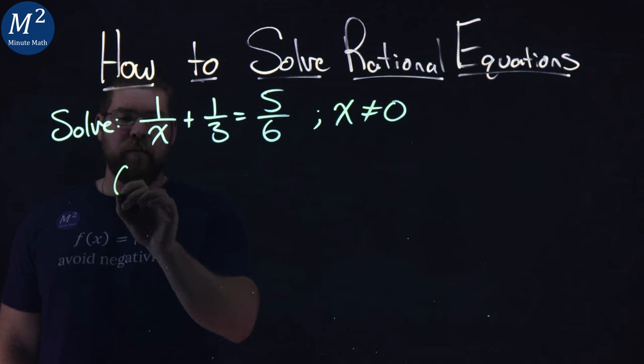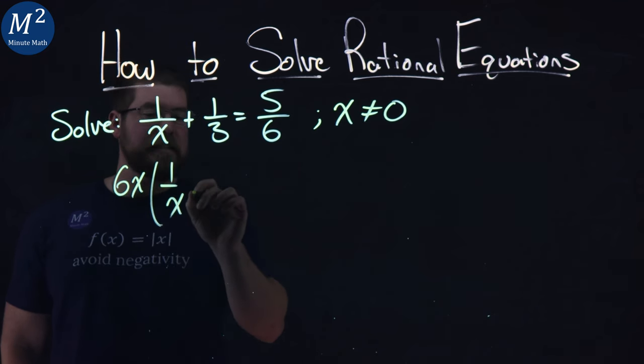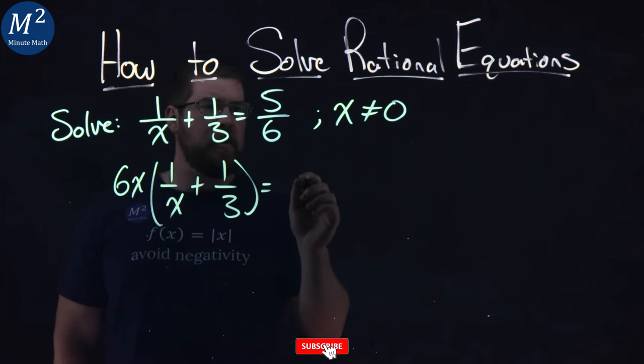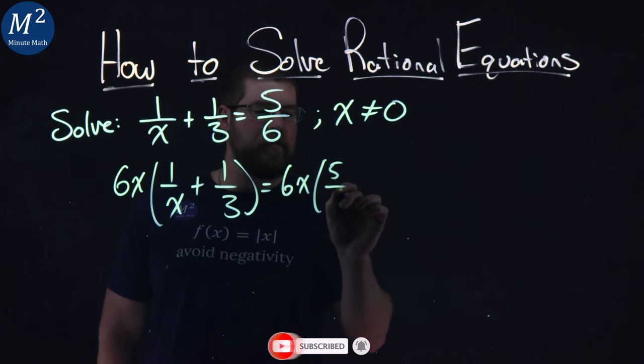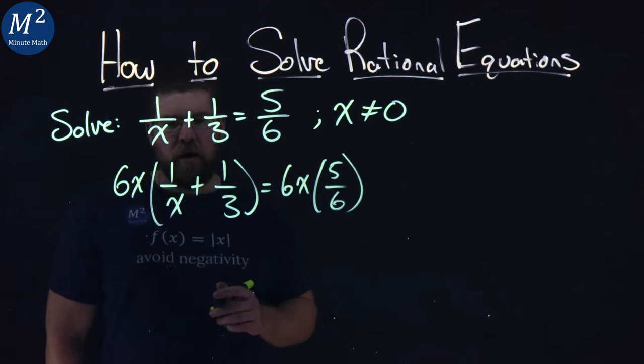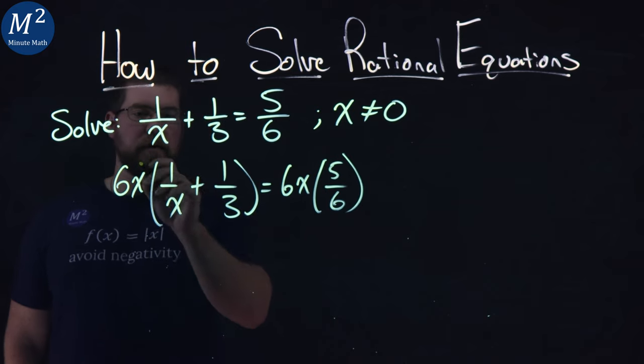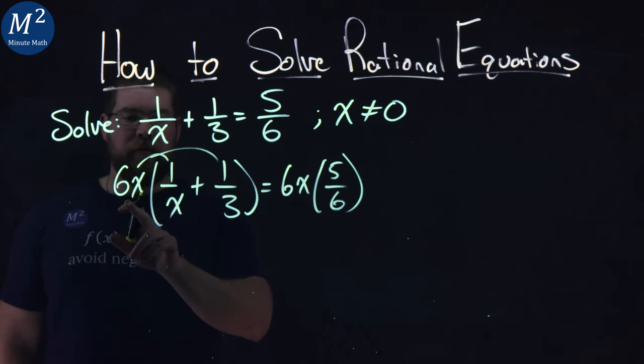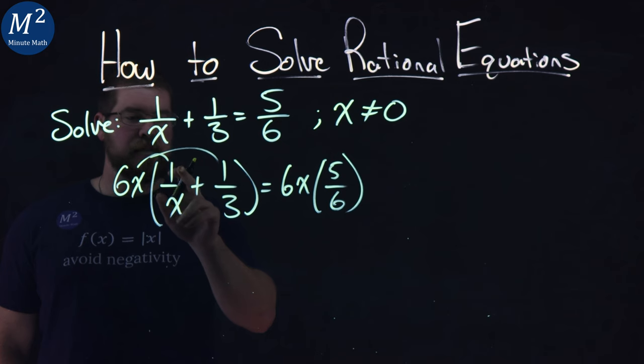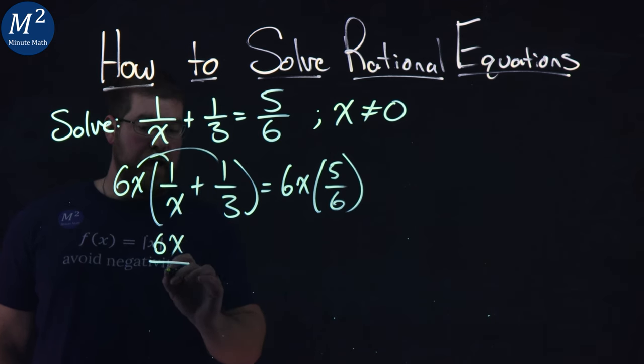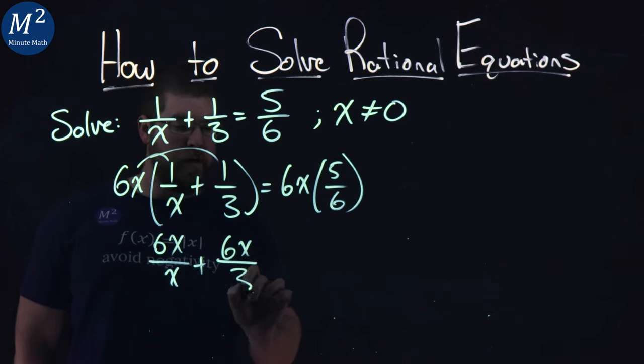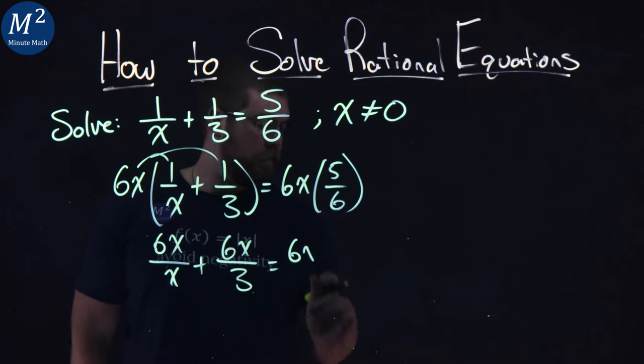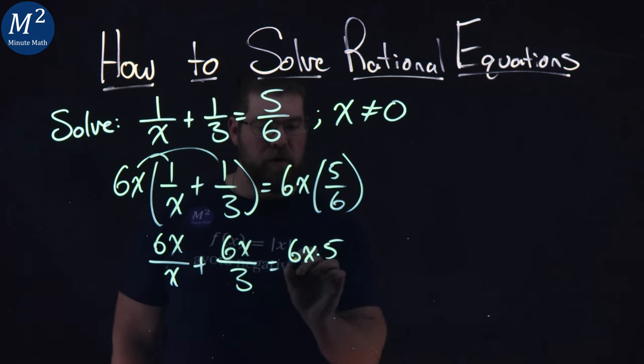So I'm going to rewrite this and multiply both sides of the equation by 6x. And this is one of the techniques you can do to solve this. So let's do 6x here, and we have 5 over 6. Well, what happens when I multiply this across to all parts here? I have 6x times 1 is 6x over x plus 6x over 3 equals 6x times 5. I'll just leave it like that, times 5 for right now, over 6.